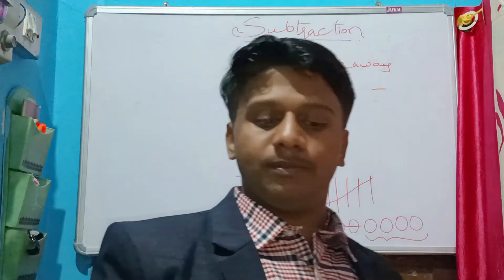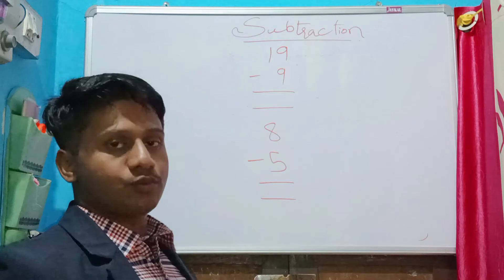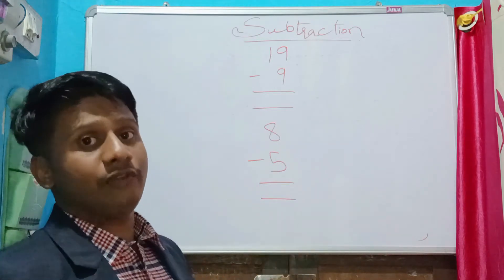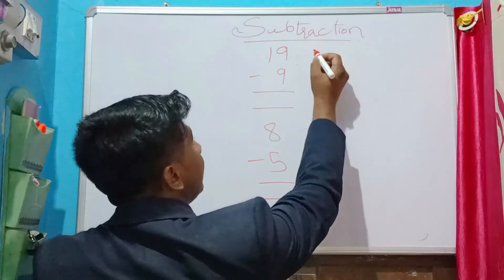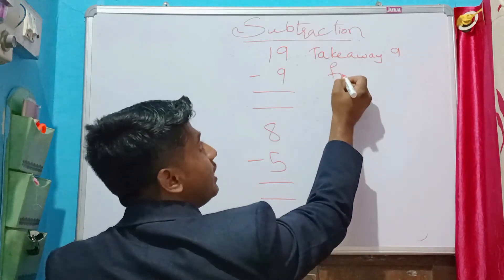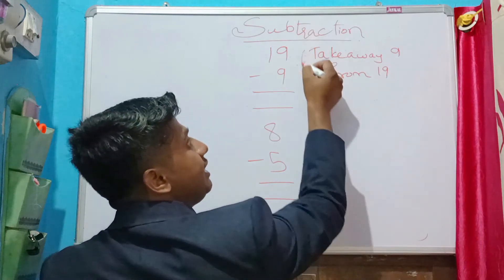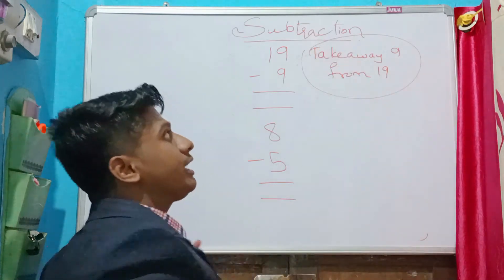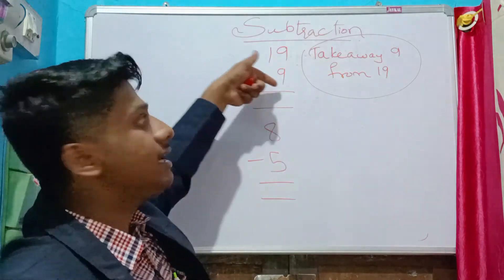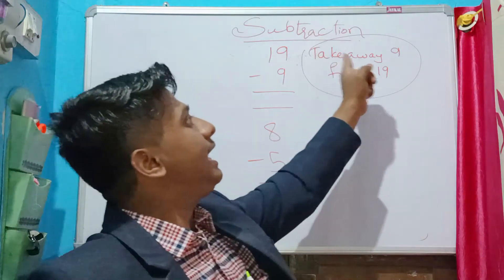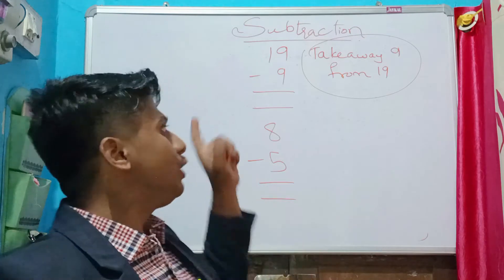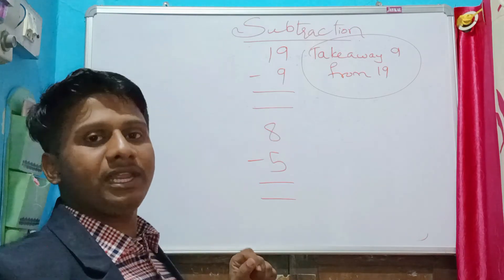Now we are going to solve the next problems. These problems can also be given in another way. They can say 'take away 9 from 19' — this means the same as '19 minus 9'. So they can either give it directly as 19 minus 9, or indirectly say 'take away 9 from 19.' Both mean the same.